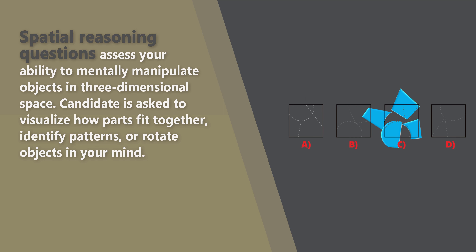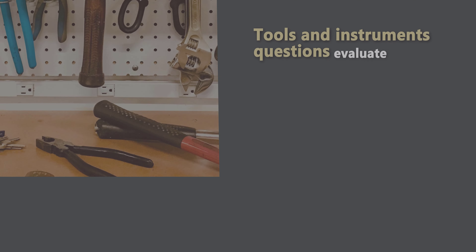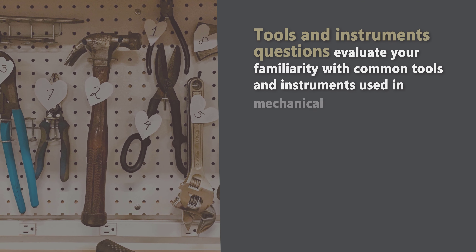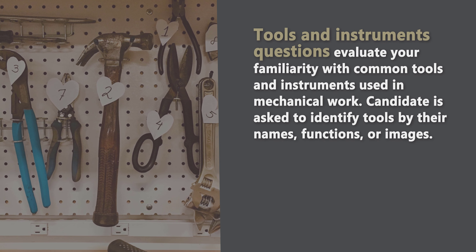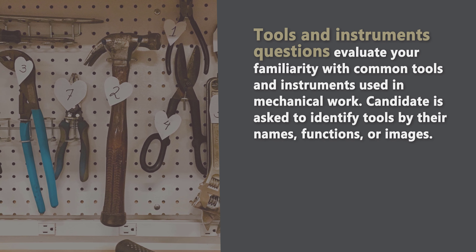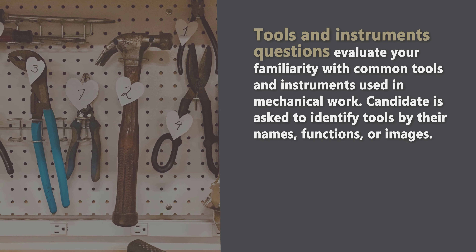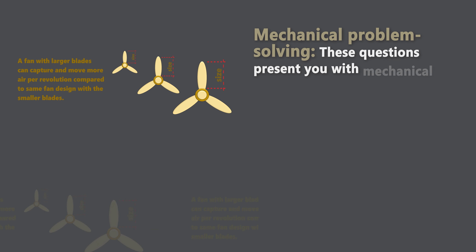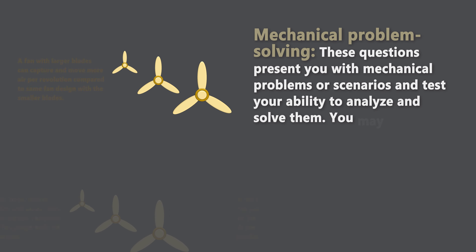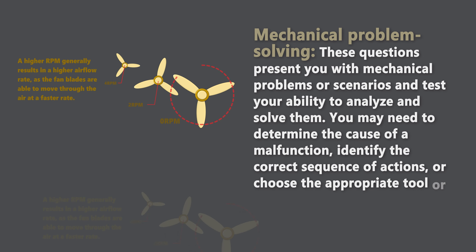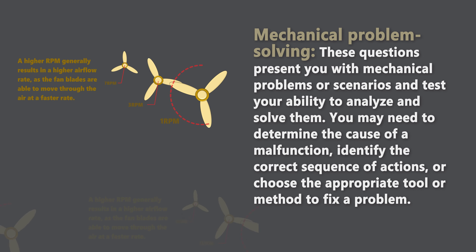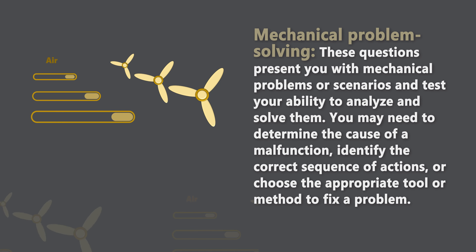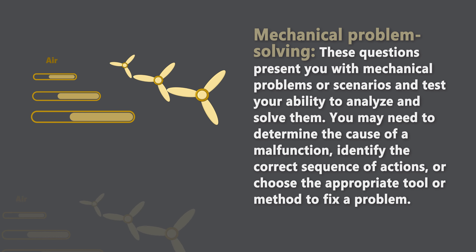Candidates are asked to visualize how parts fit together, identify patterns, or rotate objects in their mind. Tools and instrument questions evaluate your familiarity with common tools and instruments used in mechanical work — candidates are asked to identify tools by names, functions, or images. Mechanical problem solving questions present you with mechanical problems or scenarios and test your ability to analyze and solve them. You may need to determine the cause of a malfunction, identify the correct sequence of actions, or choose the appropriate tool or method to fix the problem.